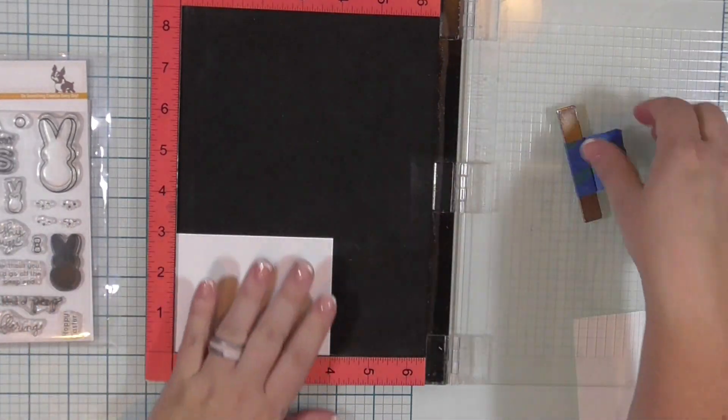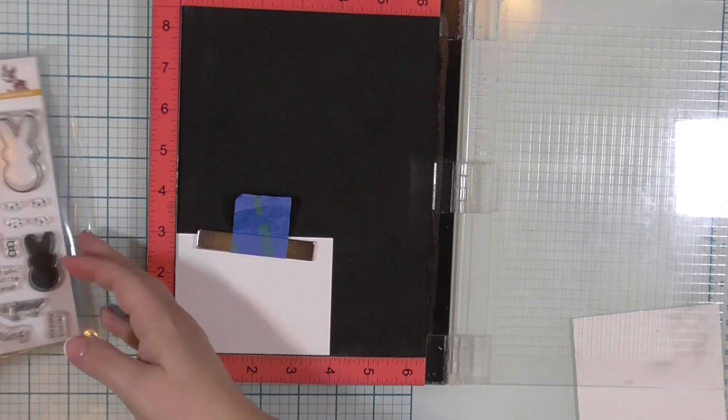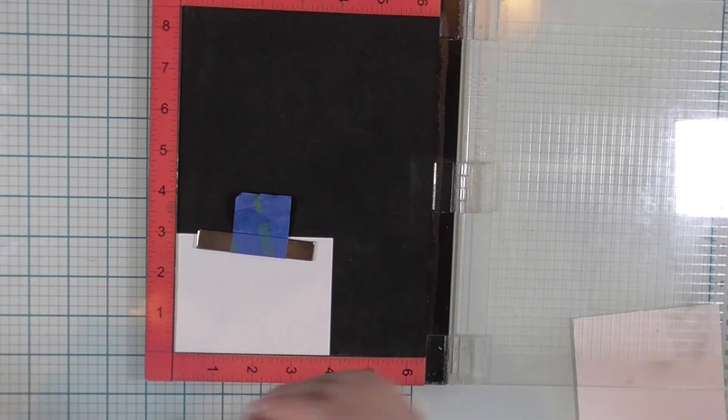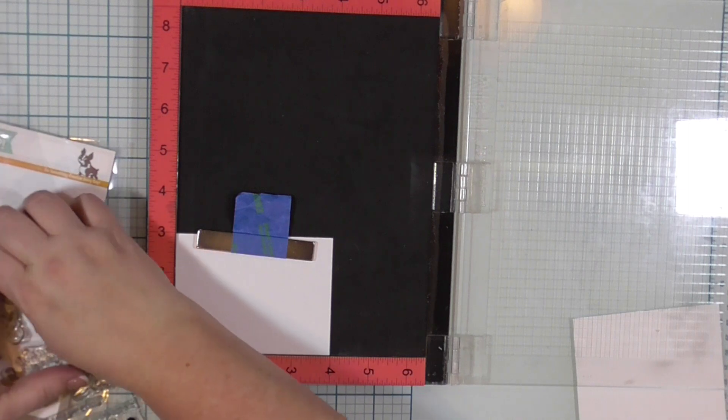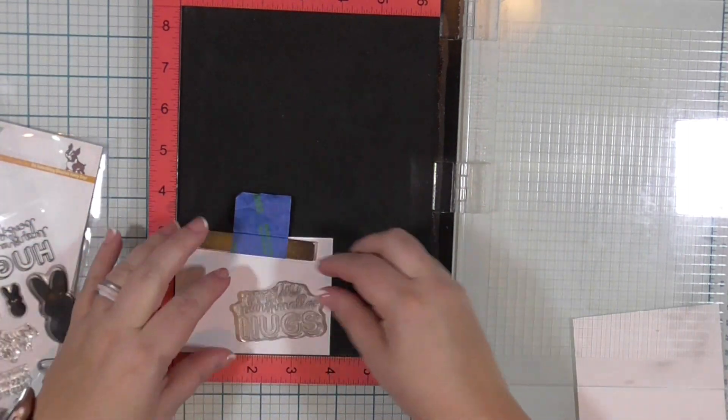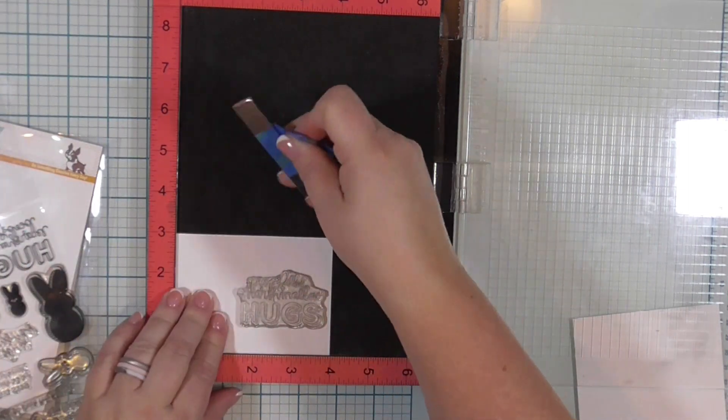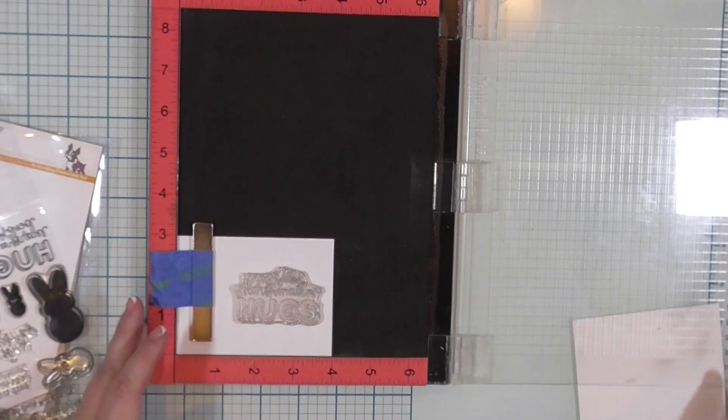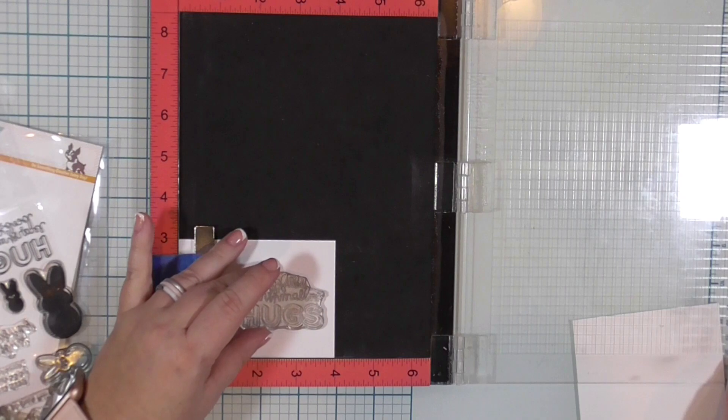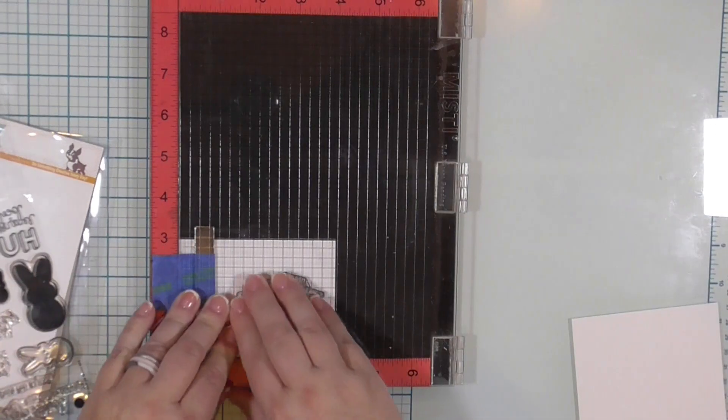First thing I want to do is take this piece of white cardstock. This is a scrap piece of Neenah Solar White Classic Crest 80-pound cardstock. And I am going to stamp the sentiment onto the right center side of this piece of paper. So my card base and my papers have all been already cut out. They're sitting over on the side of my desk waiting for me to get the coloring and stuff done.